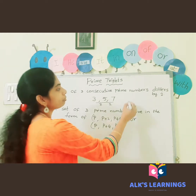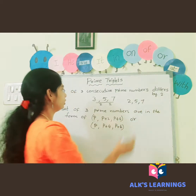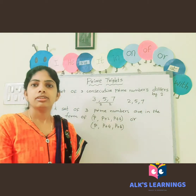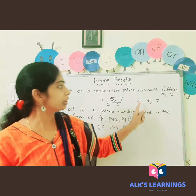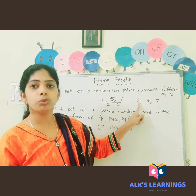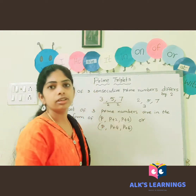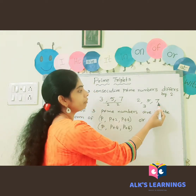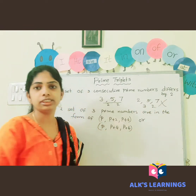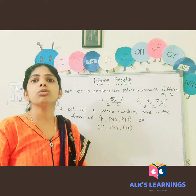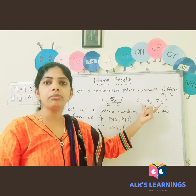Suppose if we take two, five, and seven — is this a prime triplet? The difference between five and two is three, while the difference between seven and five is two. So it is not satisfying the condition, and these numbers are not prime triplets.